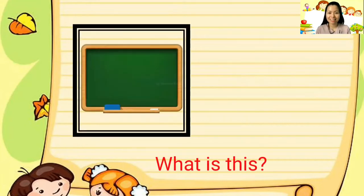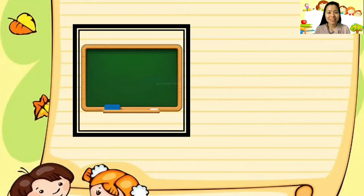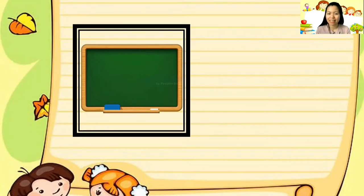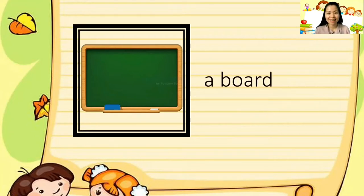What is this? Yes, you're right. It's a board. Sometimes they're color green, sometimes they're white. We write using chalk for a green board — or we call it a blackboard — and a marker for white boards. Can you say it again? Say: a board.